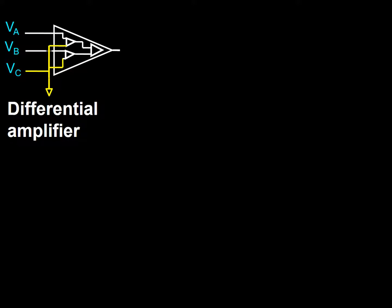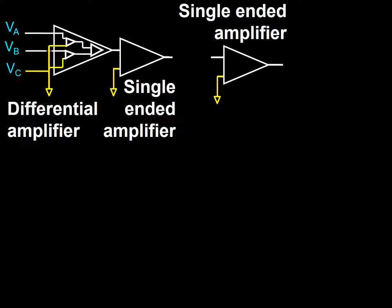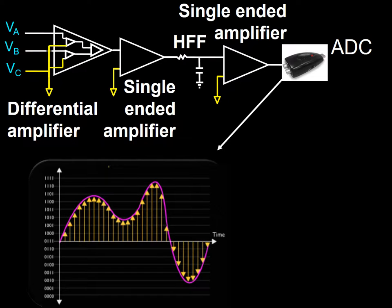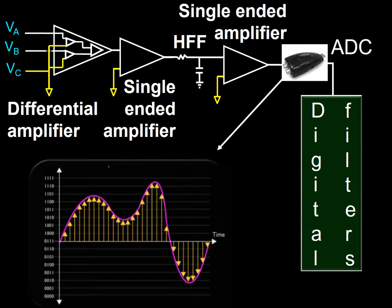The digital EEG machine has some key components. These components are differential amplifiers, single-ended amplifiers, analog high-frequency filters — also called anti-aliasing filters — analog-to-digital converters, whose function is to transform continuous fluctuating electrical signals into discrete data points in the form of binary numbers. Other components are the digital filters, which include high-frequency, low-frequency, and notch filters.